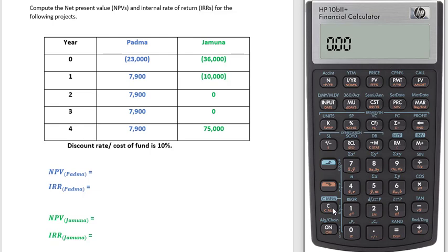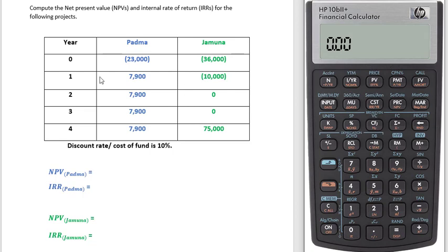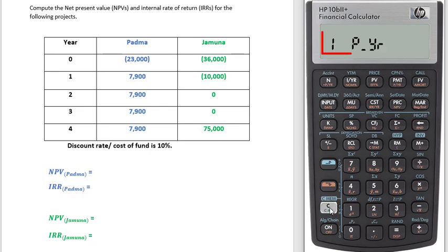To clear memory, first press Shift then C. Then we have to check payment per year — press Shift then C. We have two payments per year currently, so this calculator is calculating based on two payments per year. We need to change it to one. To change it, press one, then Shift, then the PMT button. Here you can see P/YR — payment per year — is written in orange. Press the button and check it: it has been changed to one.